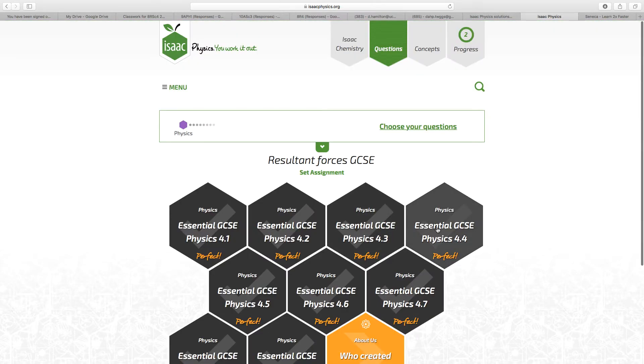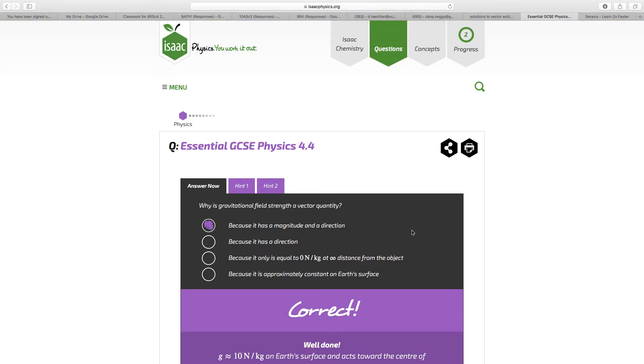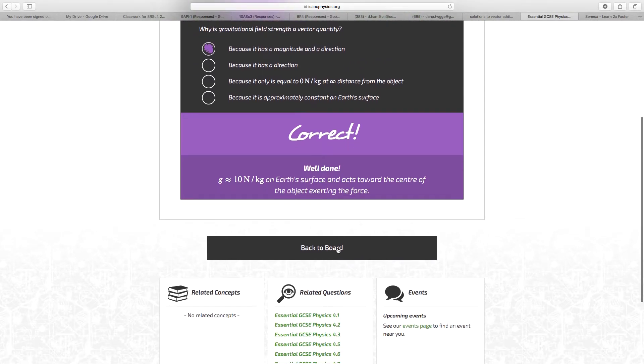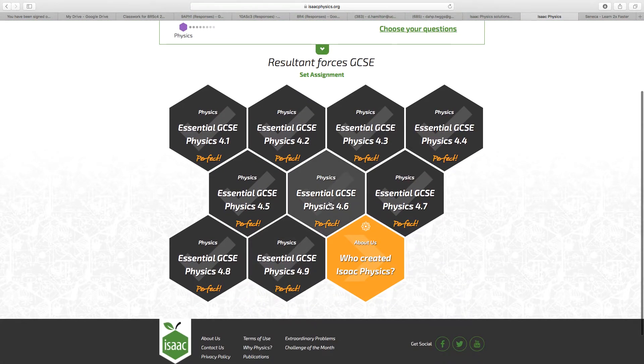I think I might have missed 4.4. Yes. Why is gravitational field strength a vector? Well, the definition of a vector is it has both magnitude and direction.